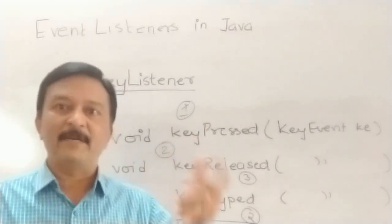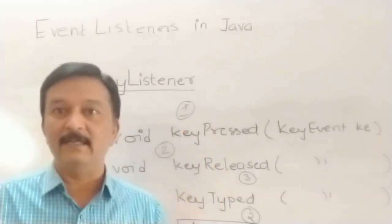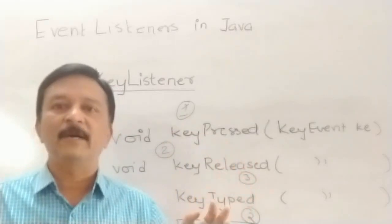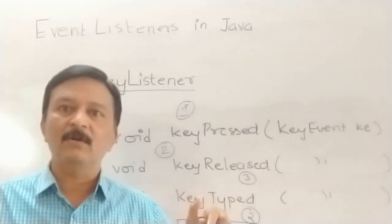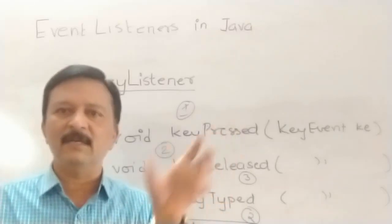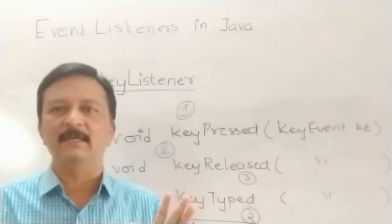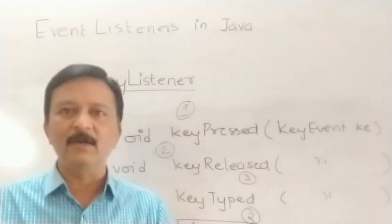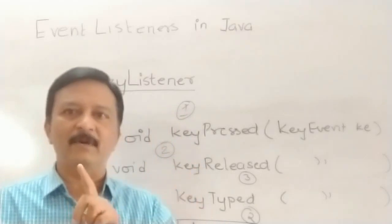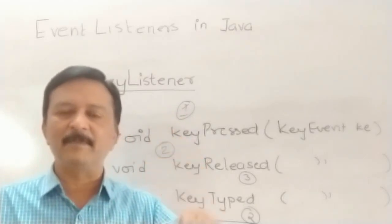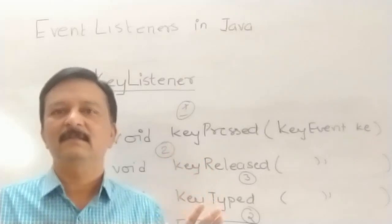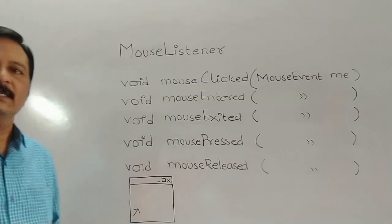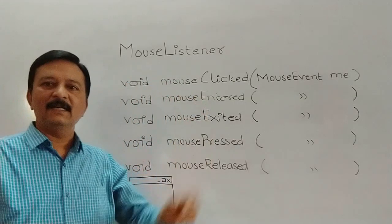But there are many keys that do not produce a character on screen — such as the Home key, End key, Control key, Shift key, Caps Lock, Num Lock, and the Windows key. When you press these special keys, there is no character displayed on screen. So for these keys, only two events occur: keyPressed and keyReleased. The keyTyped event will not be triggered for special keys like Shift.